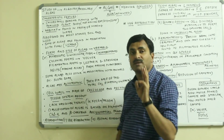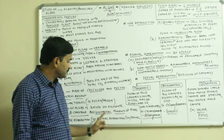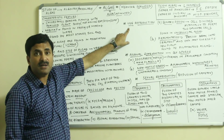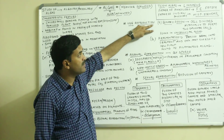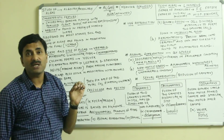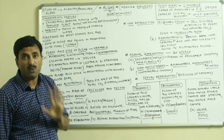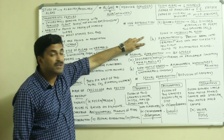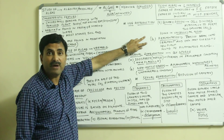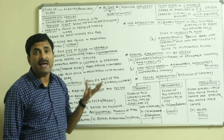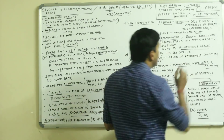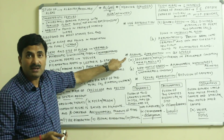Reproduction in algae occurs by three methods: vegetative reproduction, asexual reproduction, and sexual reproduction. Vegetative reproduction can occur by two major methods. One is binary fission, in which the cell divides by mitosis into two daughter cells — but binary fission can occur only in unicellular algal forms. The most common method is fragmentation, where the thallus breaks down into many fragments and each fragment gives rise to a new plant. This type of vegetative reproduction is found in filamentous algae.